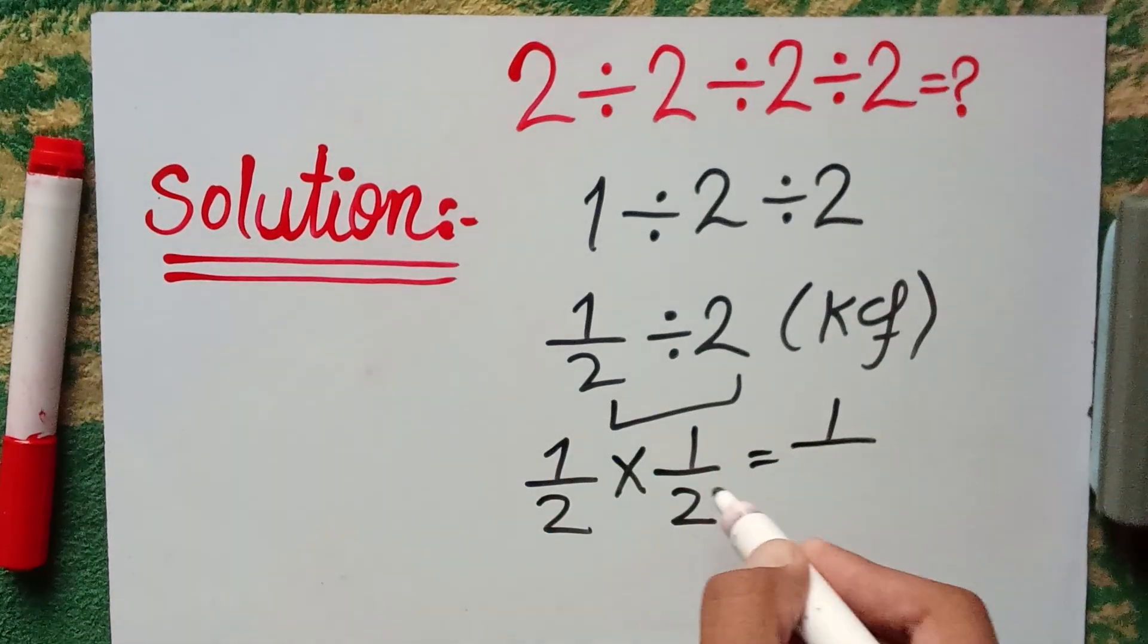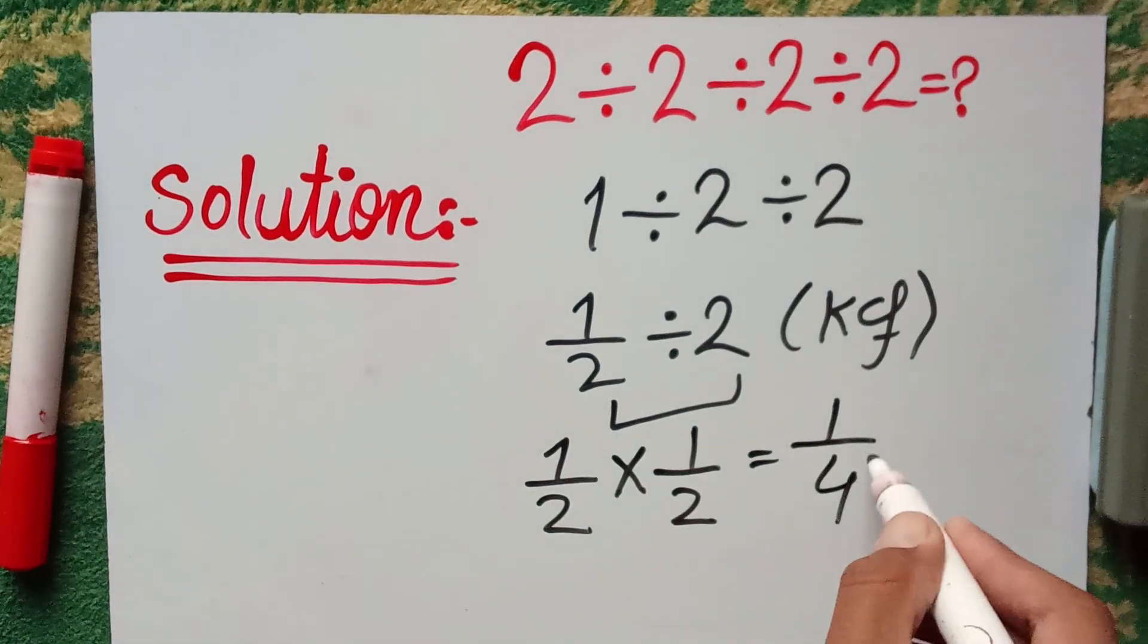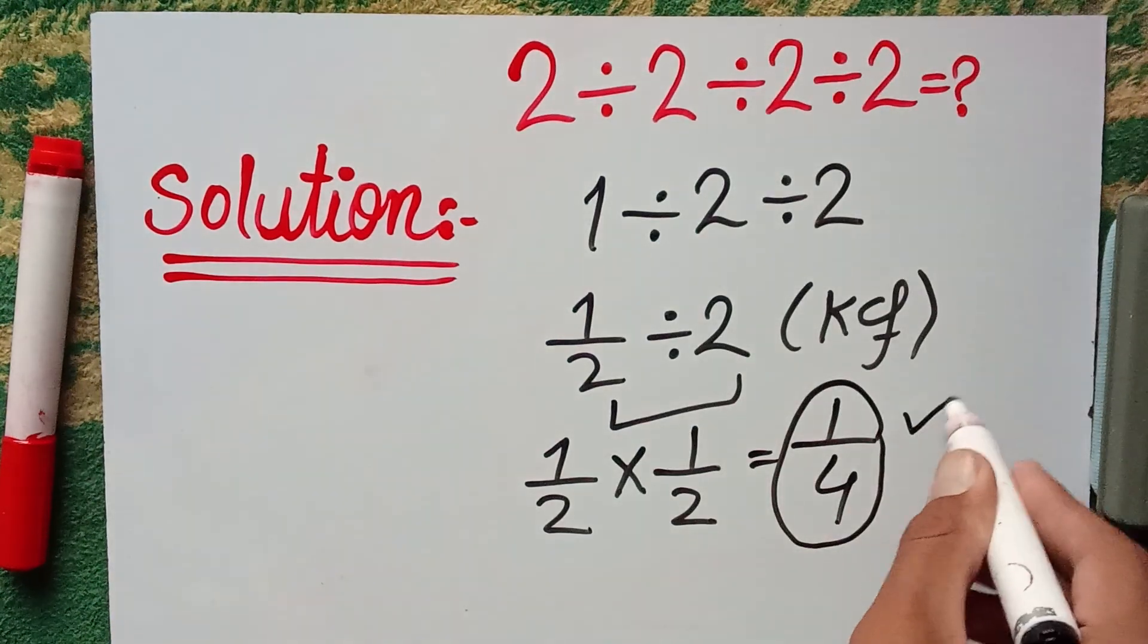Numerator is multiplied to numerator divided by denominator. The answer is one-fourth. This is the final answer of this question.